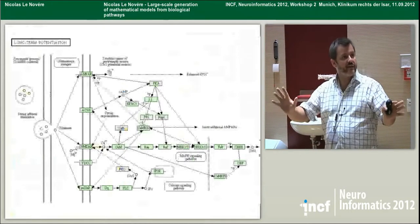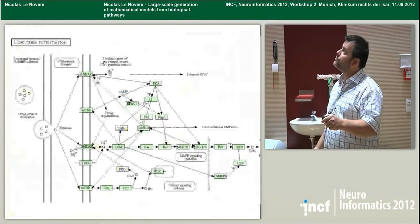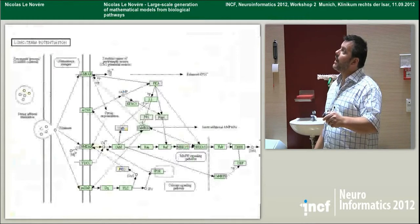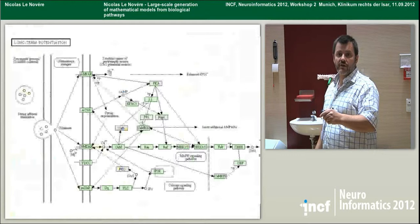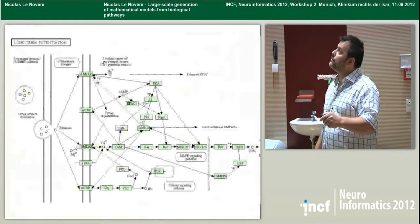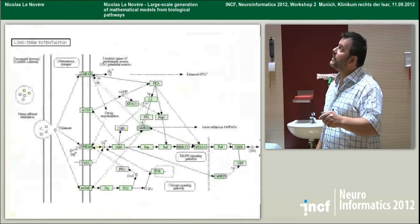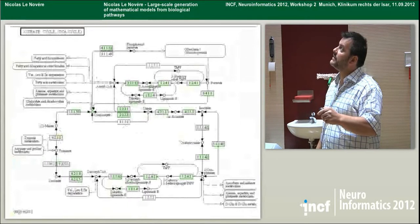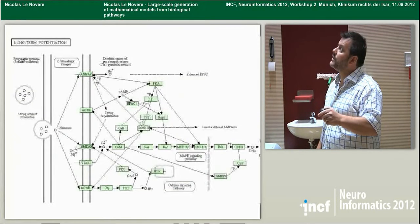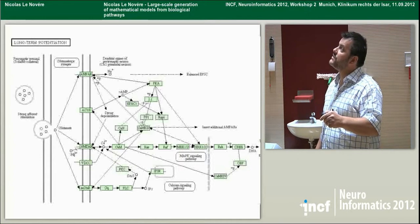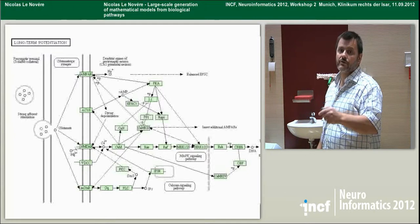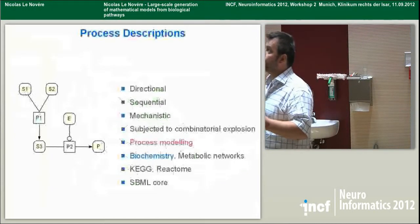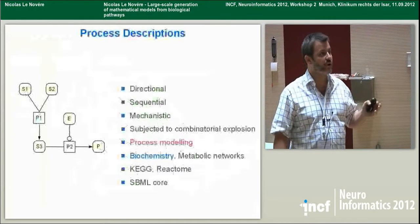There is another way to represent pathways in KEGG. If you look at a signaling pathway, you have a completely different representation where you have rectangles annotated with something that vaguely looks like a protein name, and those have arrows connecting them together. So this is a graph with only one type of node, as opposed to the bipartite graph of the metabolic representation.